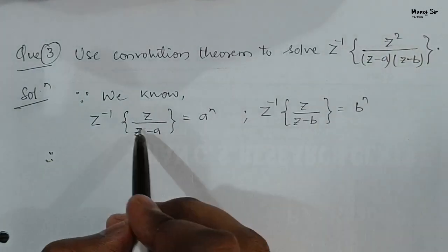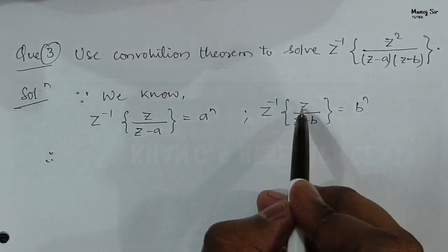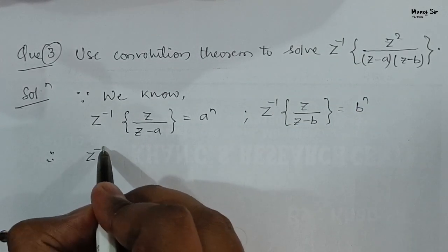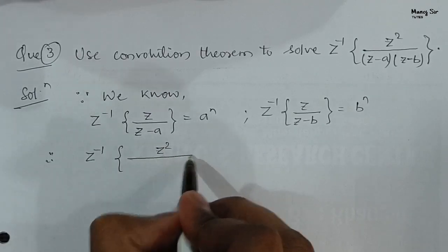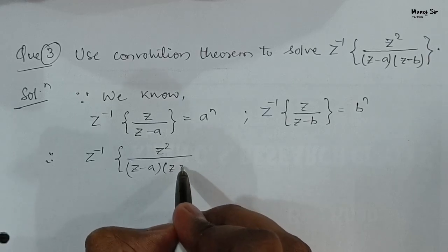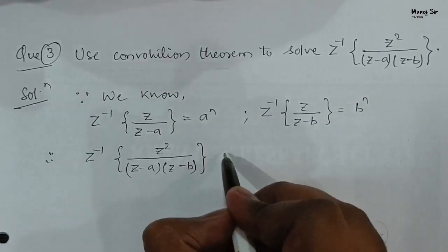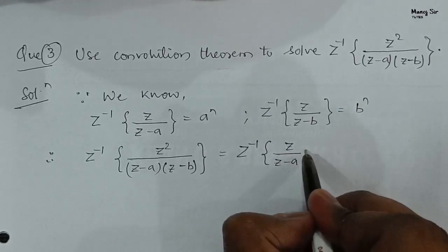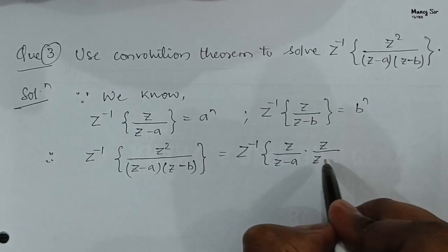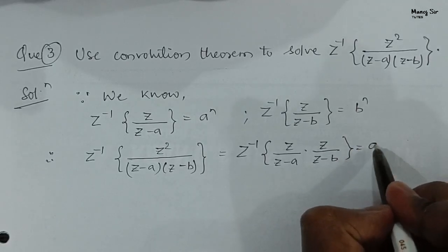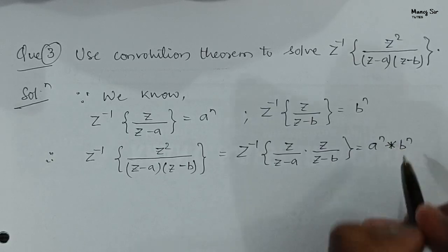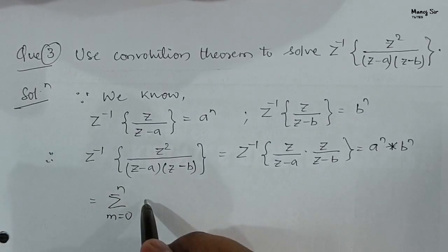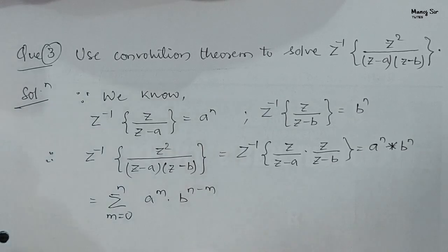Now if you see, Z²/((Z−A)(Z−B)) is nothing but Z/(Z−A) · Z/(Z−B), and we are finding the inverse Z transform of that. So the inverse Z transform of Z²/((Z−A)(Z−B)) equals the inverse Z transform of Z/(Z−A) · Z/(Z−B), which is A to the power n convolved with B to the power n. We know the formula: summation from m equals 0 to n of A^m · B^(n−m).